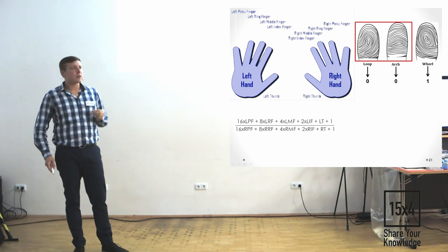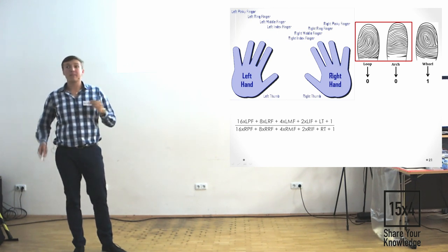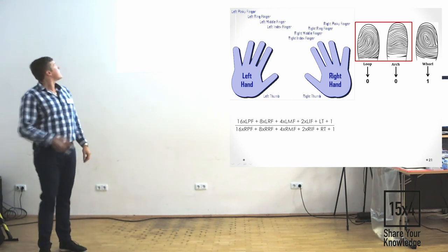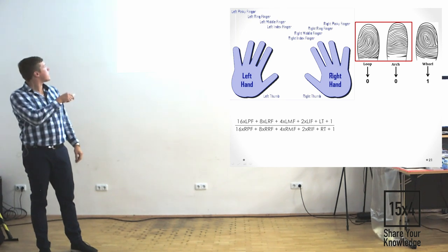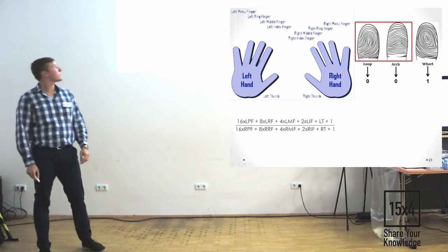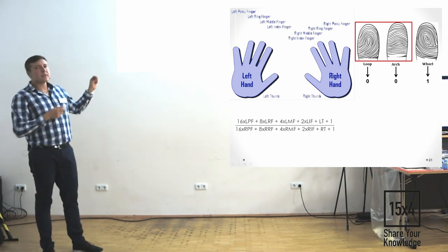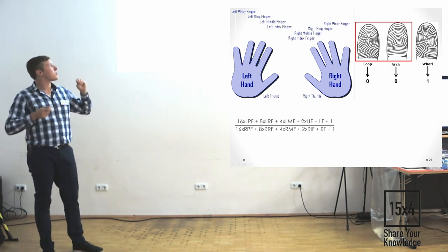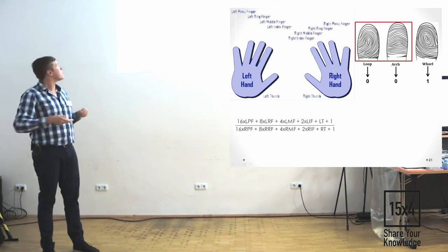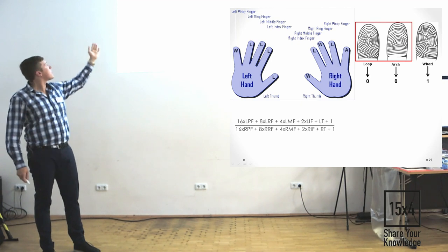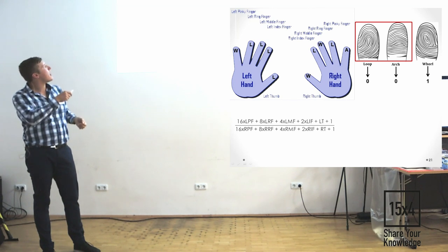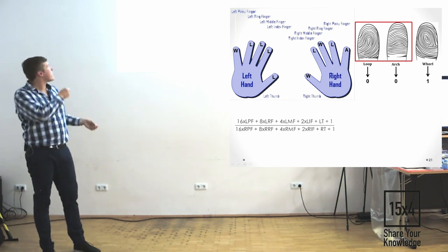For example, for loop and arcs we give a zero, for whorls is one. And then we have a special dactyloscopic formula, which looks like this. There's LPF. It's variable for left pinky finger, for left ring finger, middle finger, etc. And the same for right hand. If we just put a variable, depending on which drawing, papillary drawing we have, in this formula, we will have some numbers. For example, here, the papillary drawings of this hand. W is whorls, L is loops, A is arcs. In this formula, if our left pinky finger is whorl, so we just put one here.